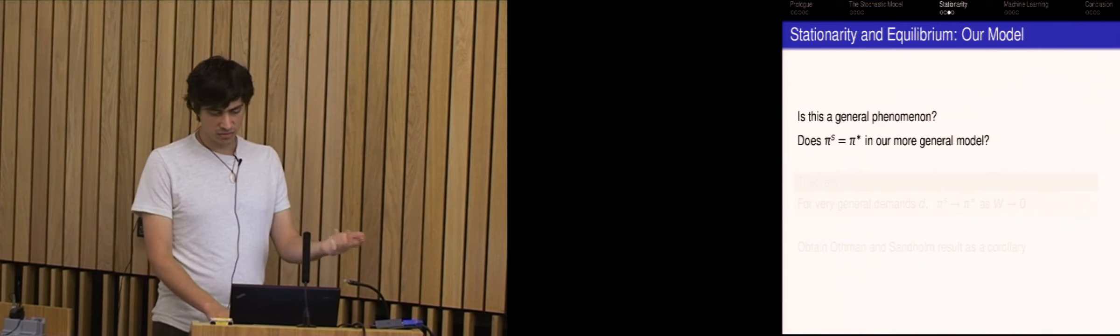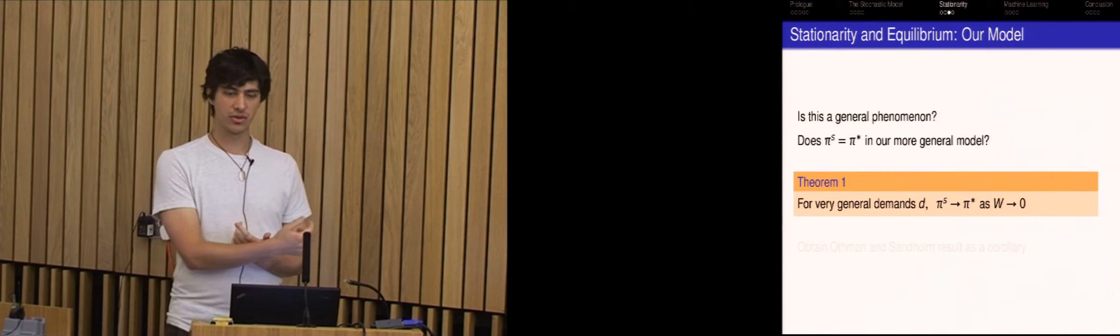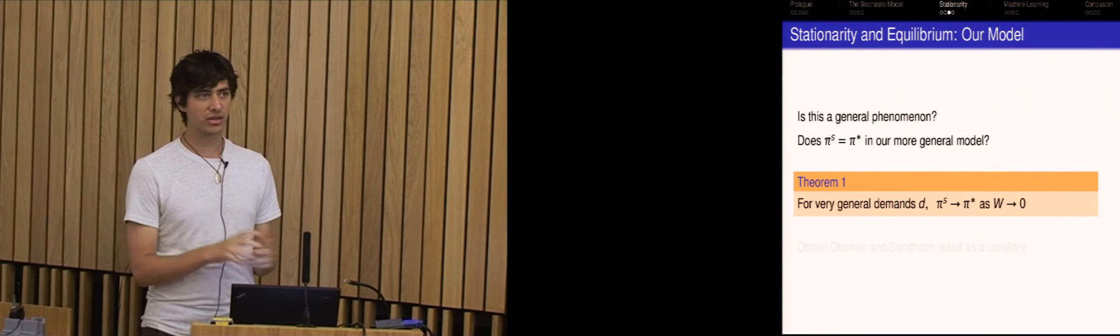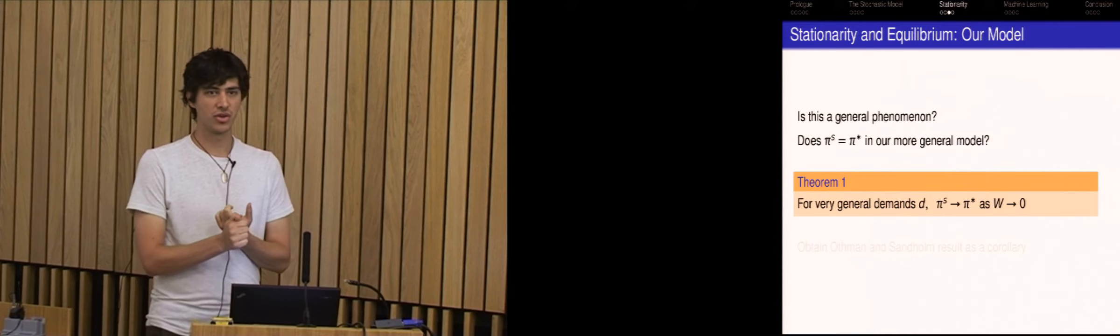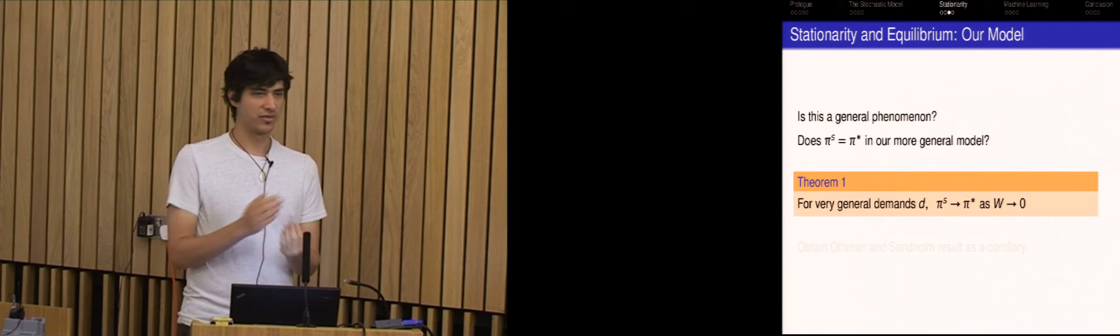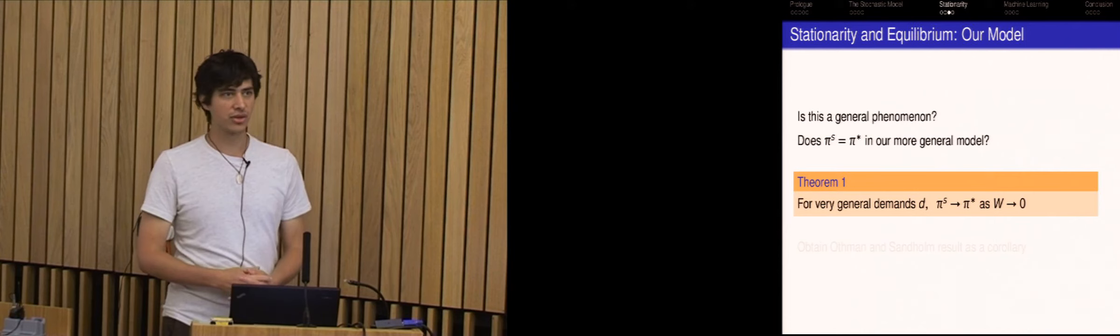And Osten and Sandholm actually look at this question and they considered a binary market again with risk neutral traders. And they had each trader invest some infinitesimal amount at a time and also randomly sampled the same model. And they found that actually these two prices are equal in this model. So you get somehow you get the same notion of equilibrium. And we asked, well is this a general phenomenon? Can we get this out of our more general model with these general demand functions? And one of our main results is that for these very general demands, in fact, if you take the wealth, take the limit as the wealth go to zero, then these two prices coincide.